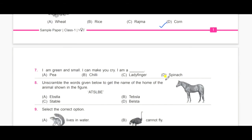Now, the seventh one. I am a green and small. I can make you cry. I am a. So, now you need to solve the riddle. A, P, B, chili, C, daddy finger and D, spinach. The answer is B, chili because chili will be hot and it can also make you cry at times.